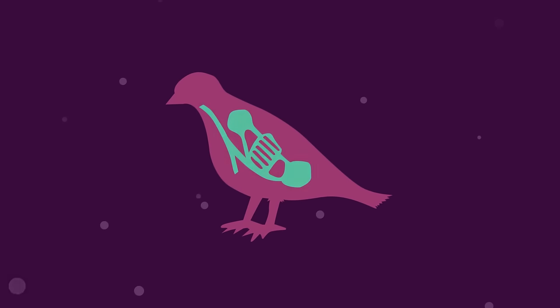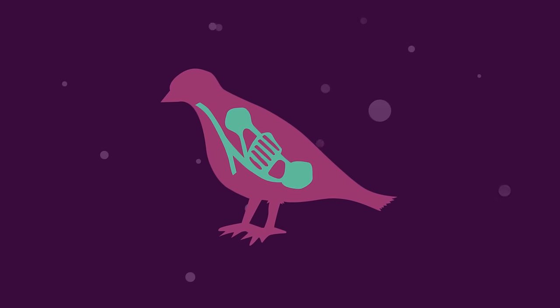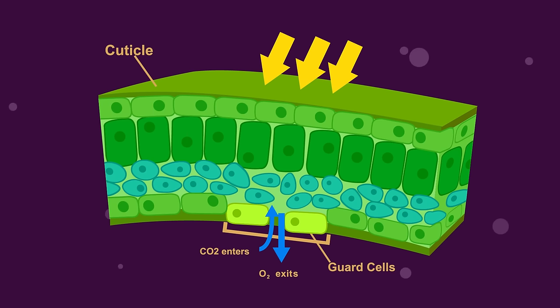Animals get the oxygen needed from the air through their ventilation systems. Plants get their oxygen from the air through the stomata.